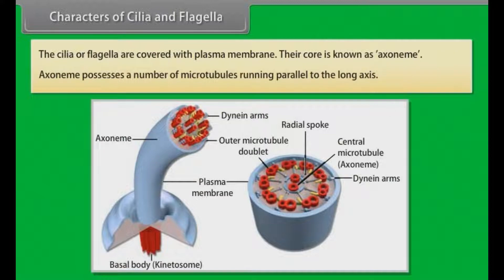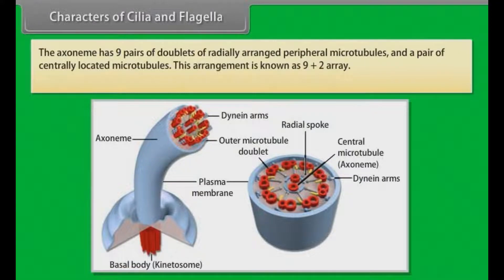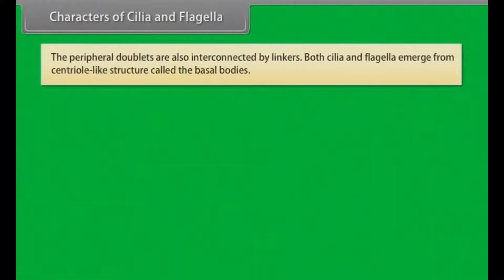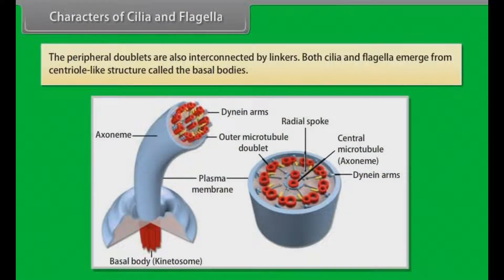The axoneme possesses a number of microtubules running parallel to the long axis. The axoneme has nine pairs of doublets of radially arranged peripheral microtubules and a pair of centrally located microtubules. This arrangement is known as the 9+2 array. The central tubules are connected by bridges and enclosed by a central sheath, which is connected to one of the tubules of each peripheral doublet by a radial spoke. The peripheral doublets are also interconnected by linkers. Both cilia and flagella emerge from a centriole-like structure called the basal bodies.